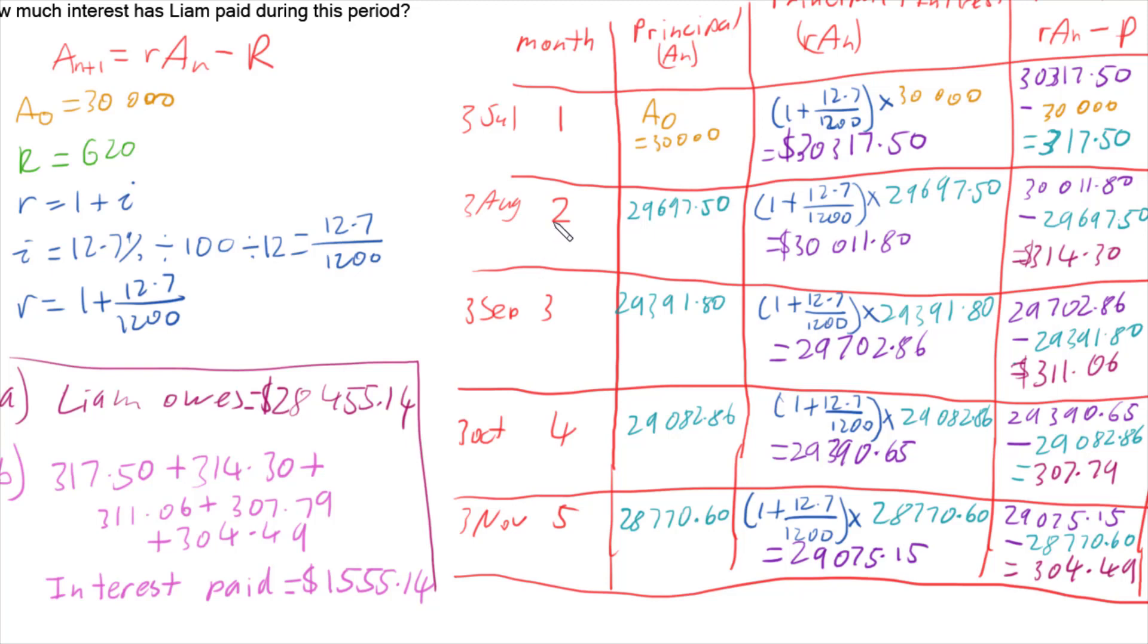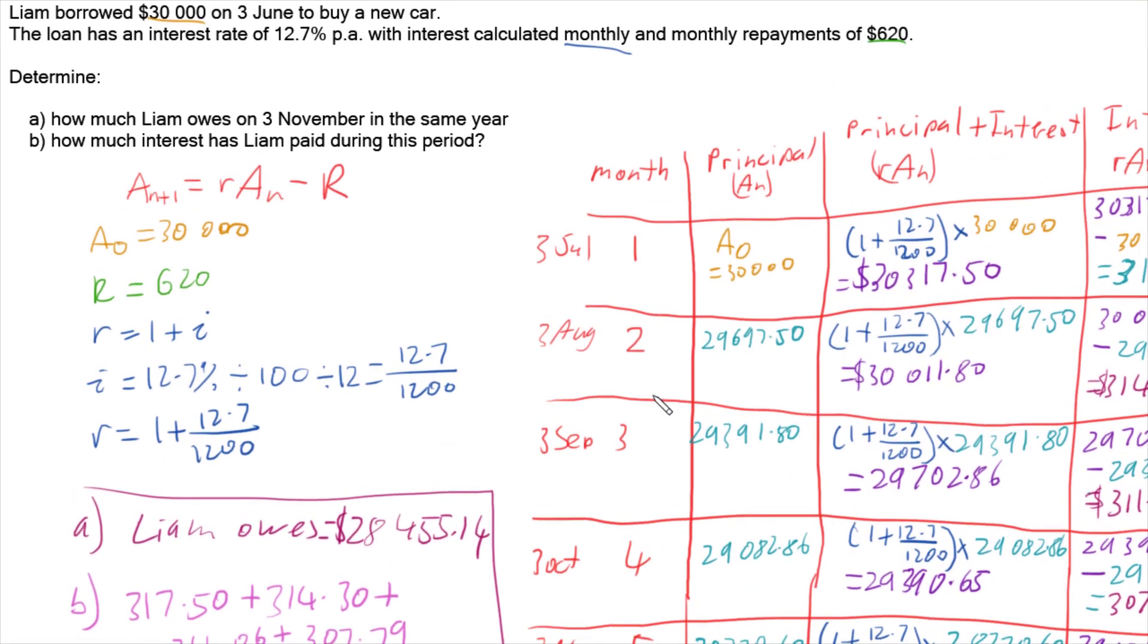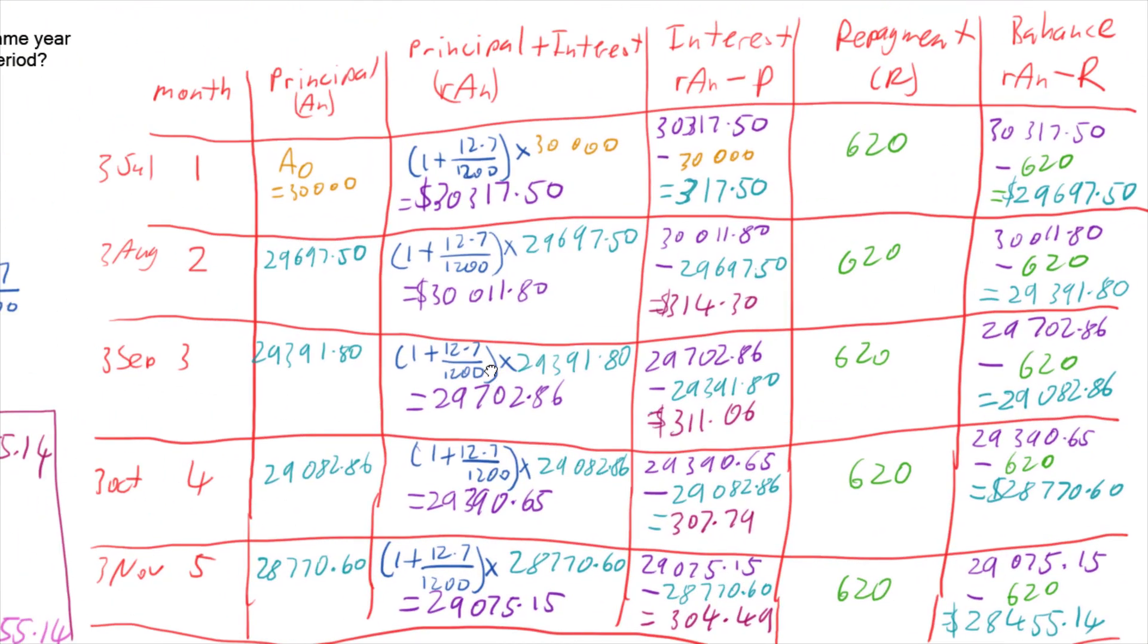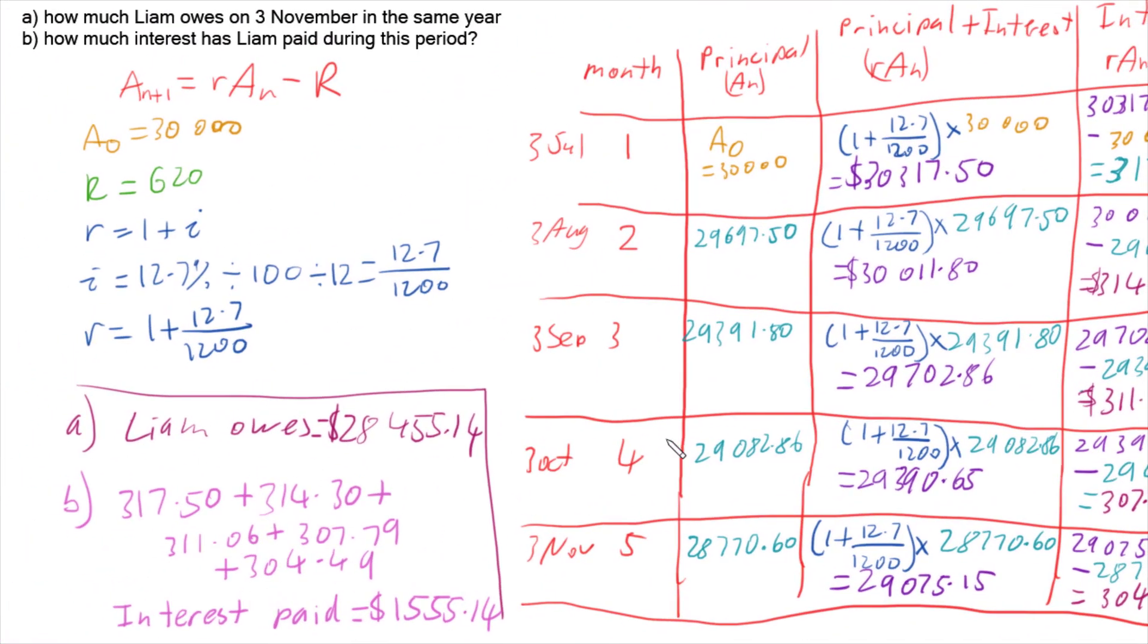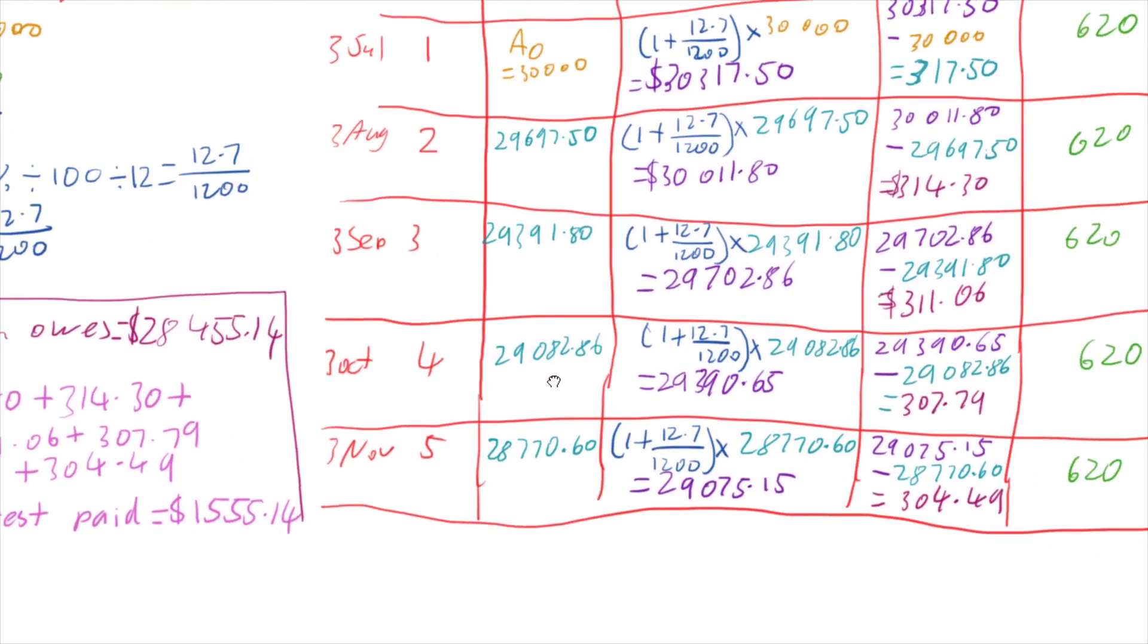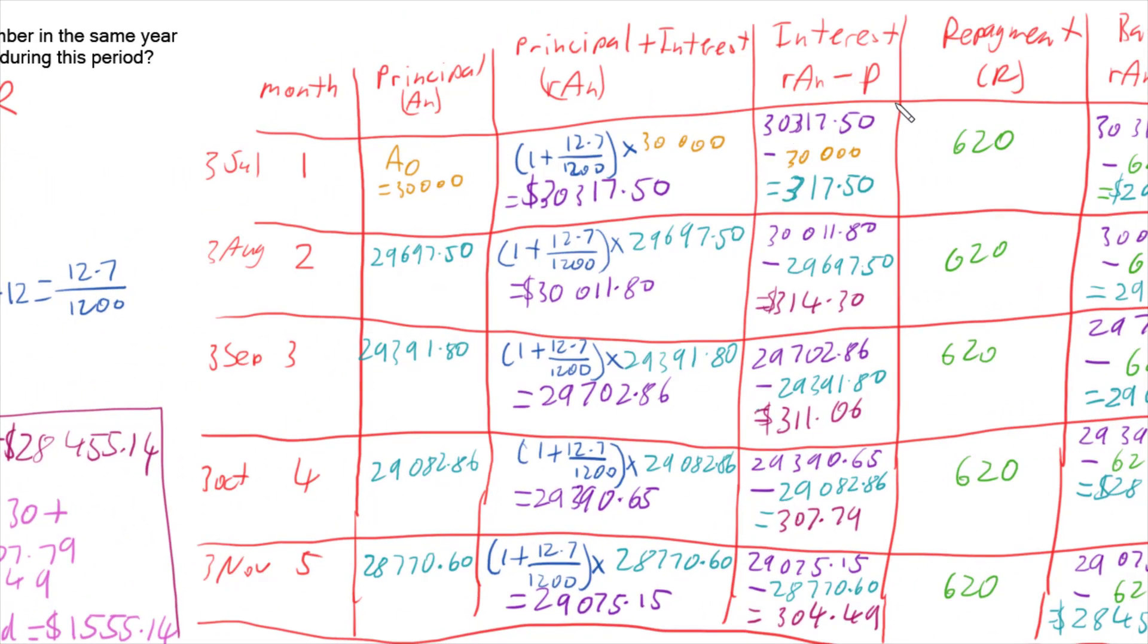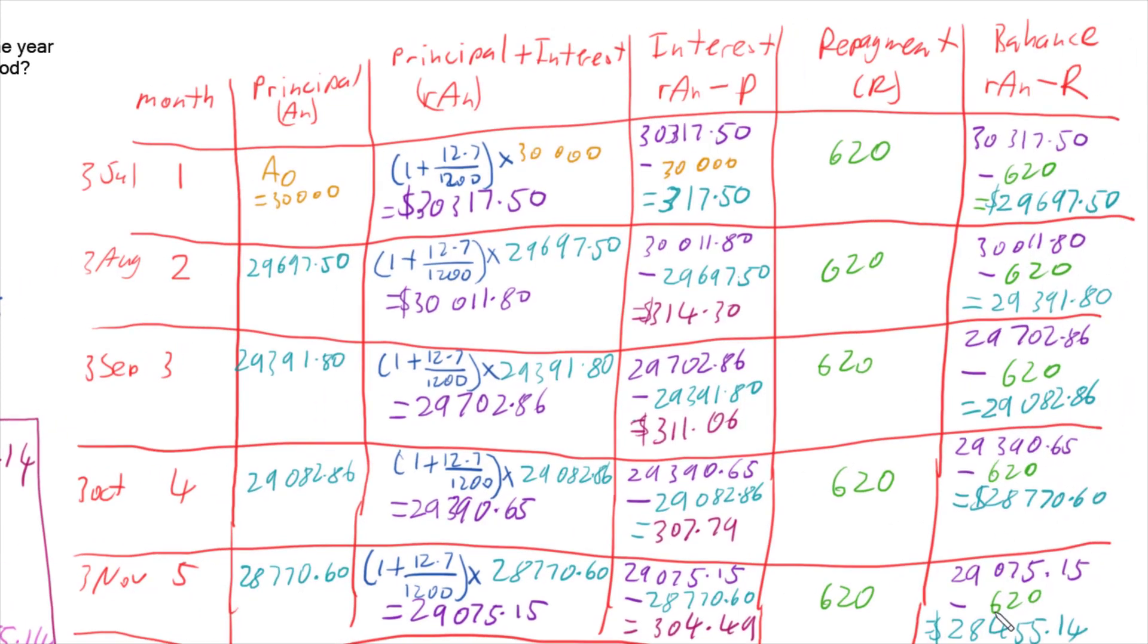So there we have it. If we have a reducing balance loan, we can use our recurrence relation, use a table to help us organize all of our calculations. And that means we can go and answer a variety of different questions along the lines of how much interest was paid, how much total repayments has he done, what balance does he have at different times throughout the loan.